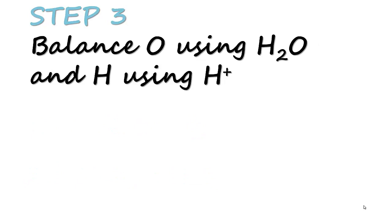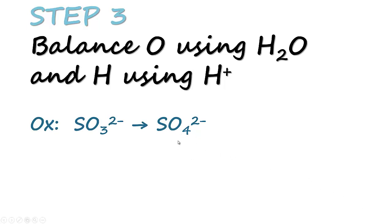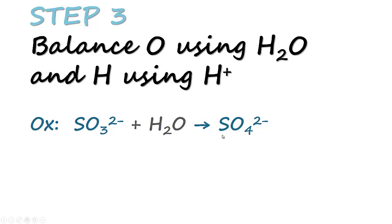For step 3, we balance oxygen using water and H+ using proton. For the oxidation equation SO3²⁻ going to SO4²⁻, there is one extra oxygen on the right hand side, so we place one water on the left hand side. Now oxygen is balanced on both sides. But because we added water, we have two extra hydrogen on the left hand side, so we add 2H+ on the right hand side. The oxidation equation is now balanced for sulfur, oxygen, and hydrogen.